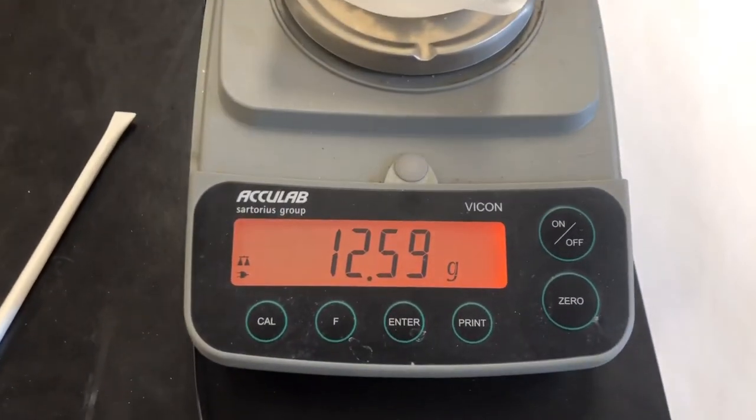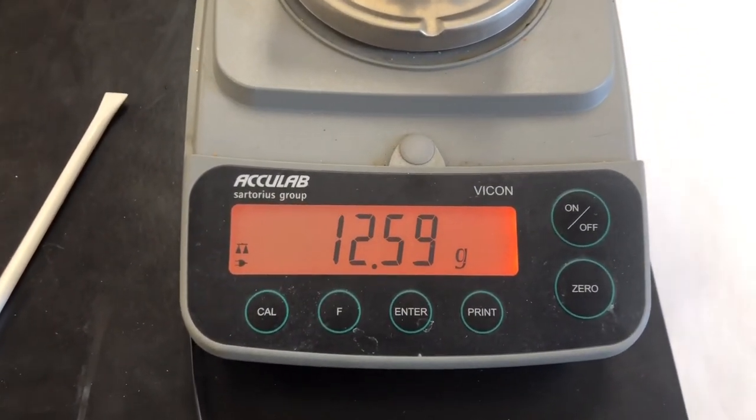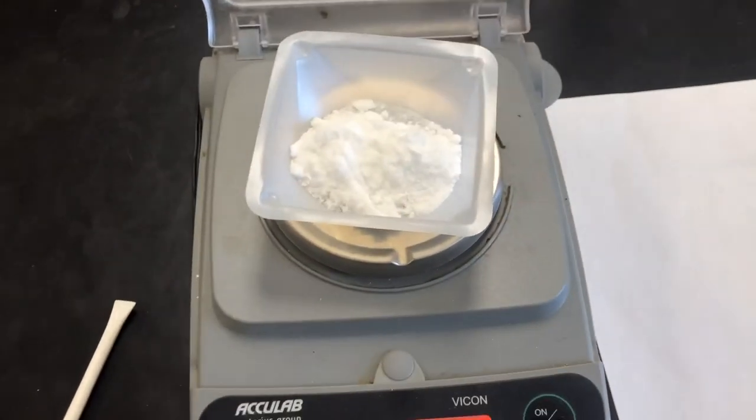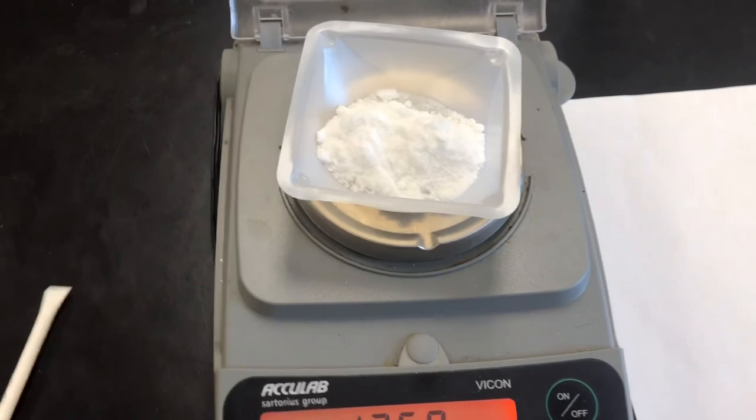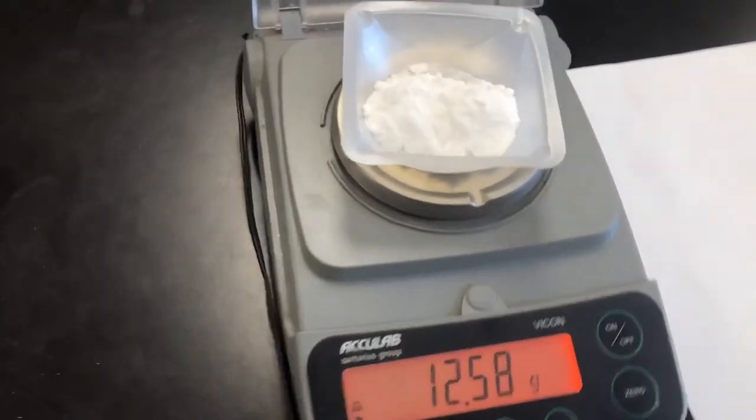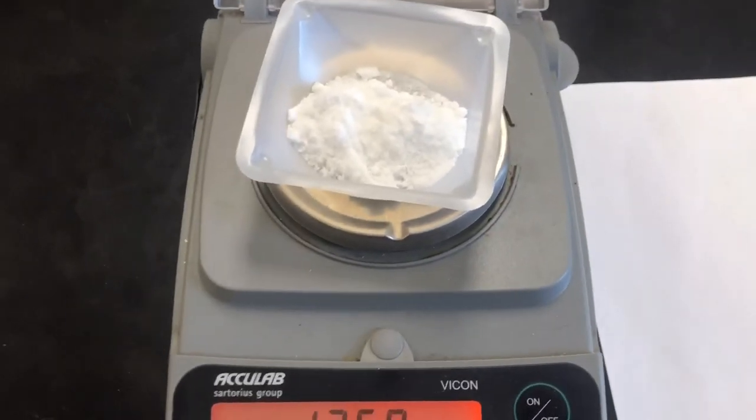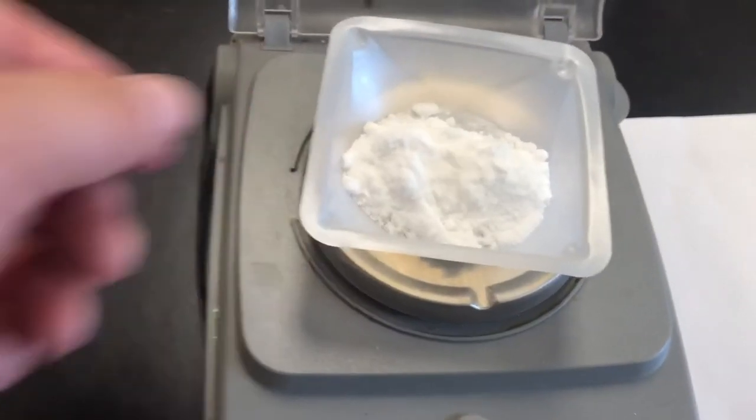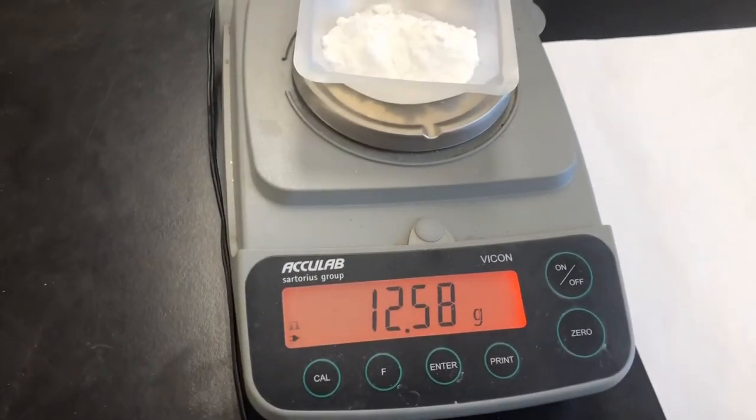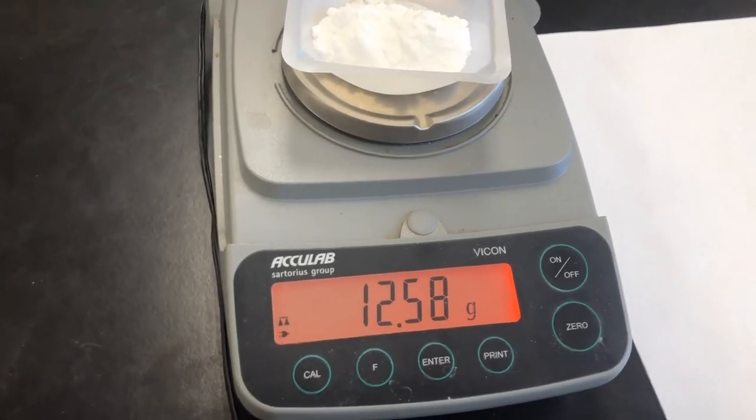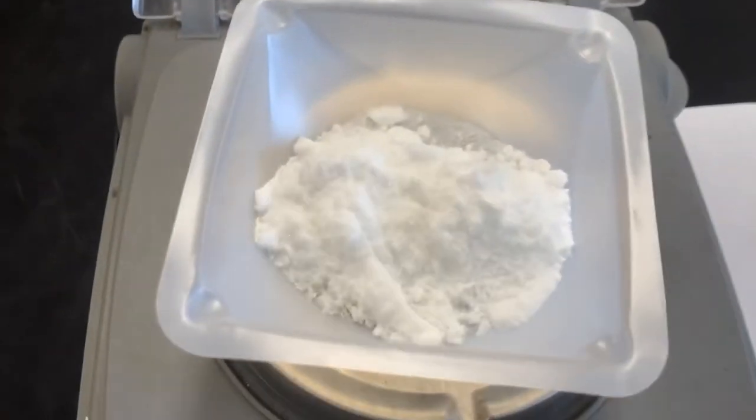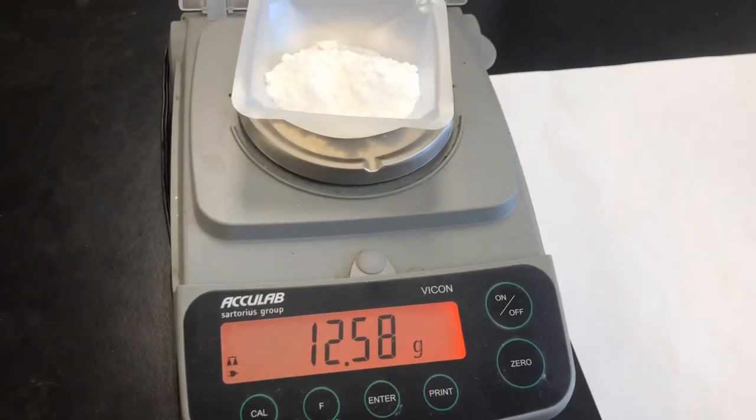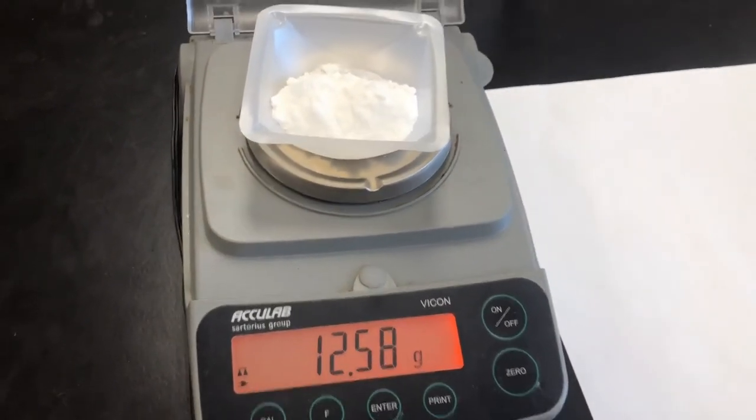After transferring we have 12.59 grams. The average percent yield for most high school chemistry students is 48 to 60 percent, so if this is above 100 percent, obviously it's probably not dry enough. So we have 12.58 grams of material that we have recovered. See what our percent yield is and get that written up and put into Google Forms.